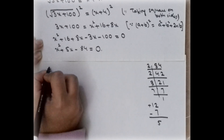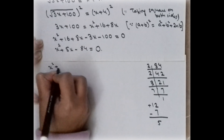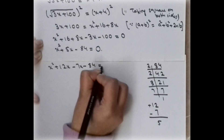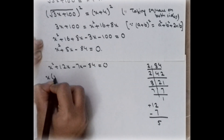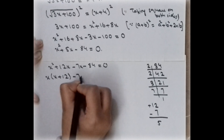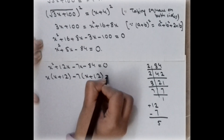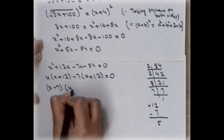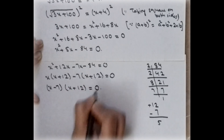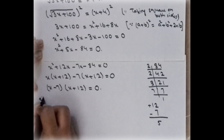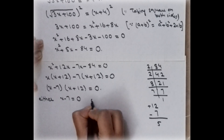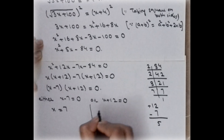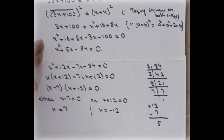So we can write: x² + 12x − 7x − 84 = 0. Taking common factors: x(x + 12) − 7(x + 12) = 0, which gives (x − 7)(x + 12) = 0. Therefore either x − 7 = 0 or x + 12 = 0, so x = 7 or x = −12.